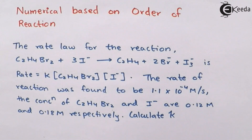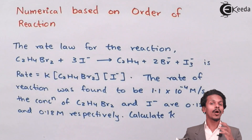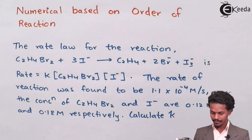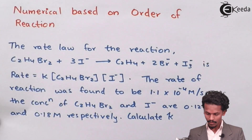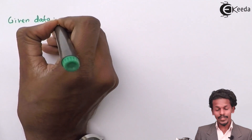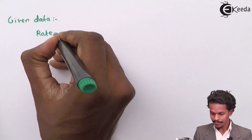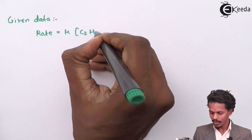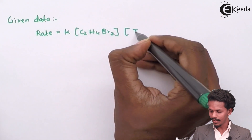First of all we have to extract the data from the question. The first data mentioned is the reaction itself, but the most important thing is that the rate law is also mentioned in this question — and this plays a very important role in solving this numerical, because it gives the experimental values of x and y. So in the given data, the rate law is: rate equals K times [C2H4Br2] times [I⁻].